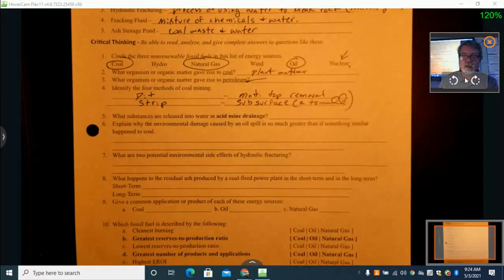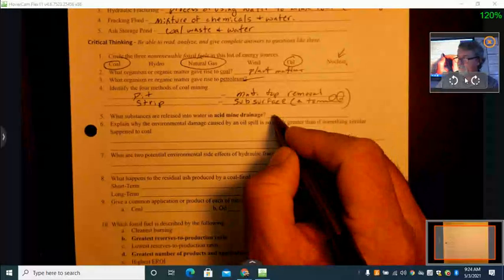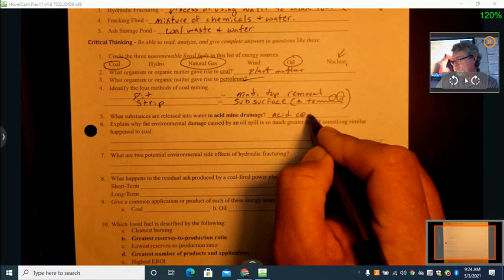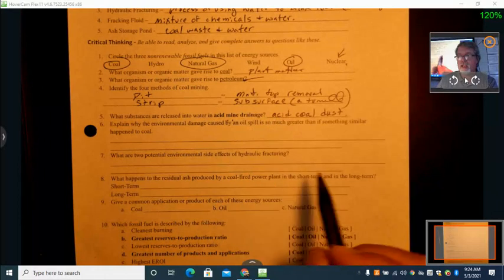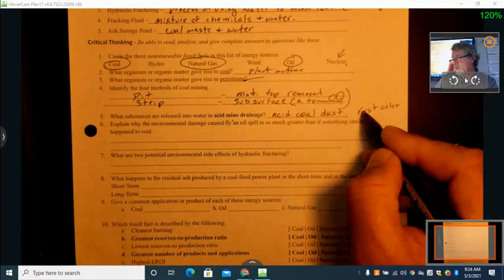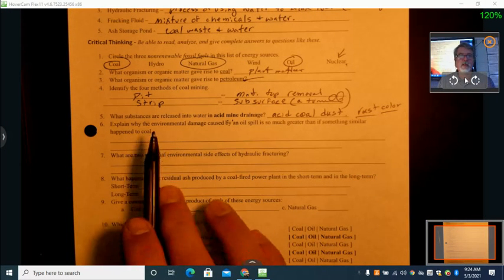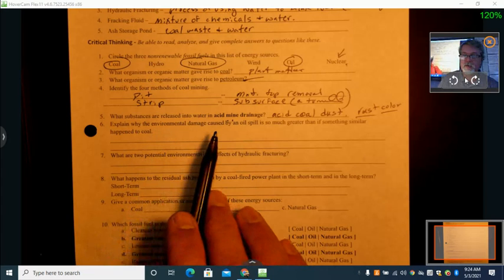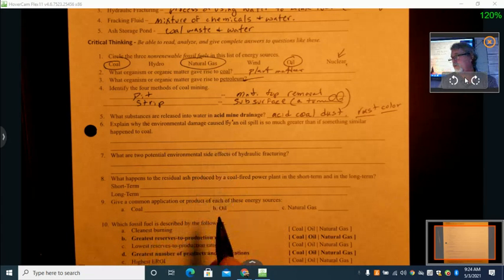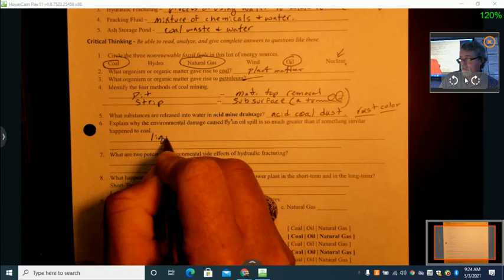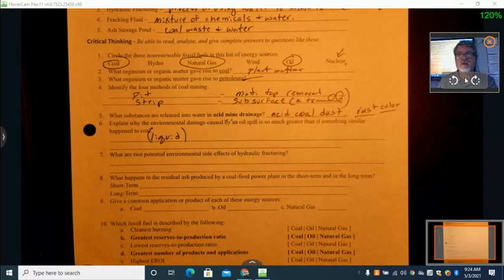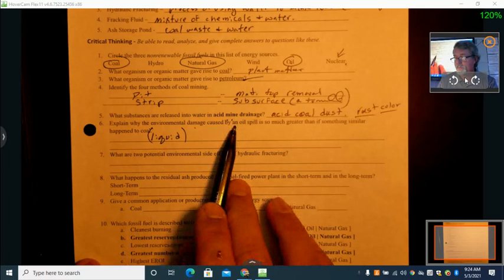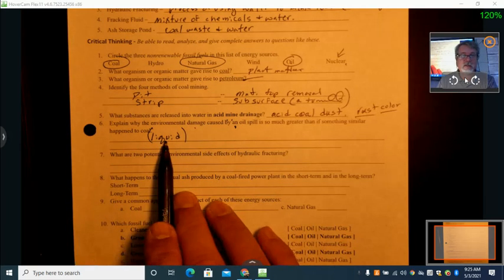But one of the main problems is acid mine drainage. What substances are released into water and acid mine drainage? Acidic coal dust. Or a mixture of that coal dust from the water seeping through releases out. Remember it has that rust color when it comes out. So definitely harmful to the environment and the fish there. Explain why environmental damage could be caused by an oil spillage. That's a really simple answer - it's because it's a liquid. So it's hard to recover. Obviously if this liquid spills on the soil, it mixes into the soil. If it spills in the ocean, it spreads out. The environmental damage caused by oil spill is much greater than others because simply the fact that it's a liquid.